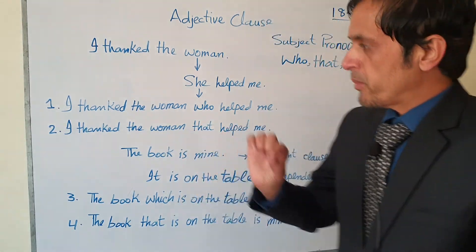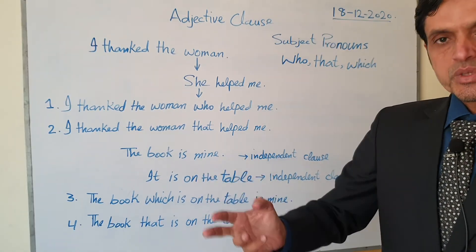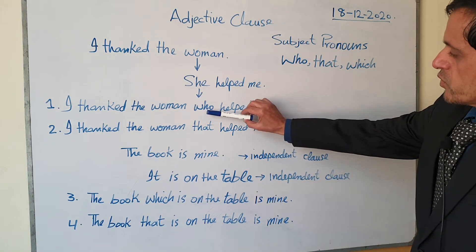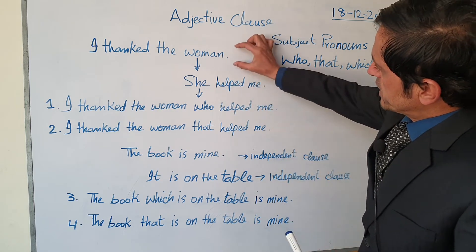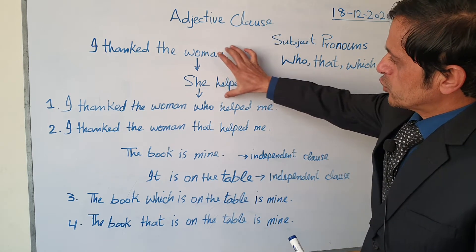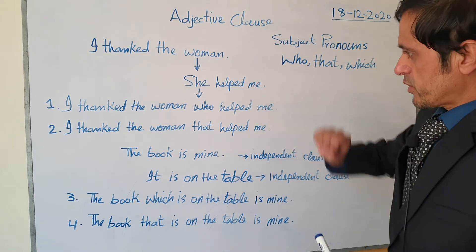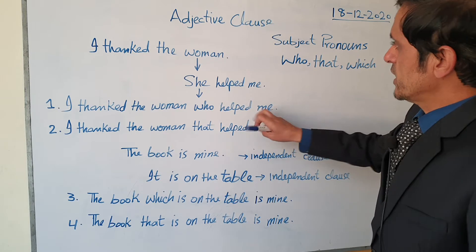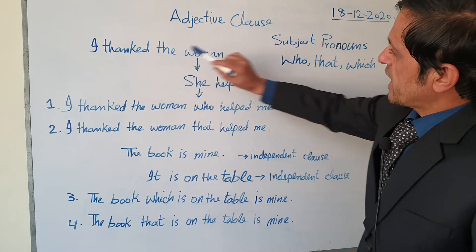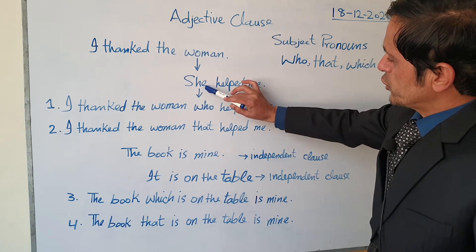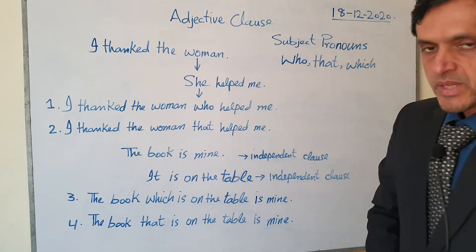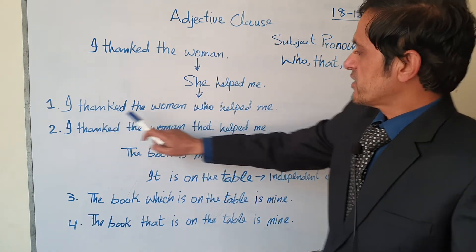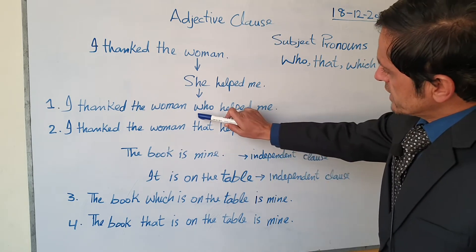Now I want to make an adjective clause from these two independent clauses. I can make it like this: 'I thanked the woman who helped me.' In 'she helped me,' the woman is she — and now this 'she' becomes 'who.' So this 'who' modifies the noun 'woman.' We can say 'I thanked the woman who helped me.' This is the adjective clause, and it modifies the noun 'woman.'